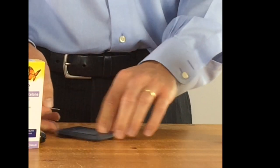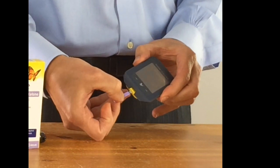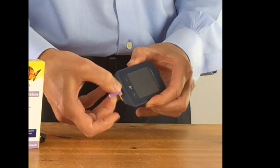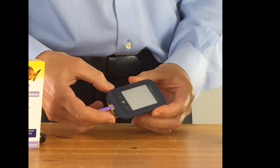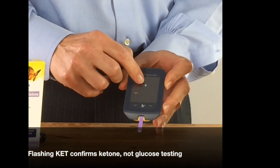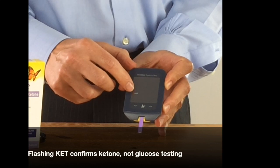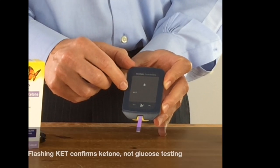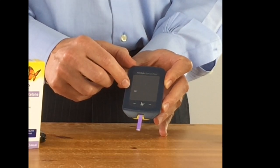We're going to put the black and white stripes up into the ketone testing meter, and that will then start to flash with a little blood droplet meter there. It'll say KET, indicating that it's testing ketones rather than blood sugar level.